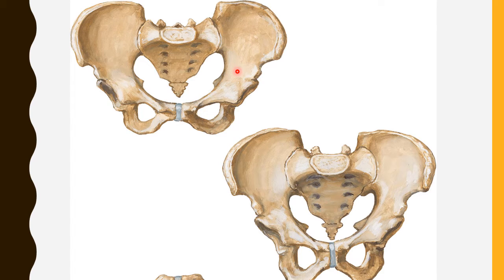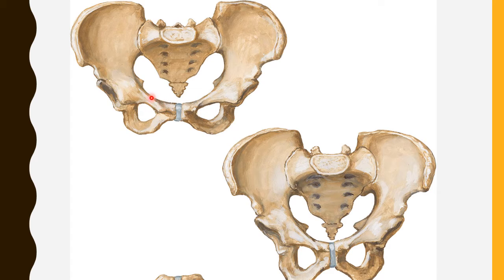The entire bony pelvis is divided into two parts: the greater pelvis and the lesser pelvis. This division is made by the arcuate line or linea terminalis, which extends from the sacral promontory — the anterior margin of the first sacral vertebra. This line runs anterior to the ala of the sacrum, along the inner surface of the ilium, through the iliopubic eminence, along the superior margin of the pubic bones at the pecten pubis, reaching the pubic crest.